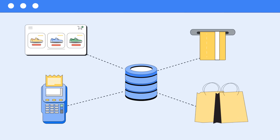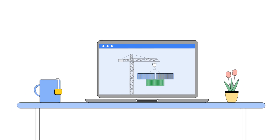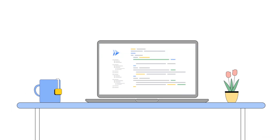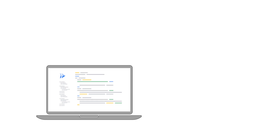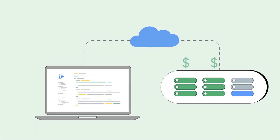Whether you have event-driven or long-running services, or are deploying containerized jobs to process data, Cloud Run automatically scales your containers up and down from zero. This means you only pay when your code is running.